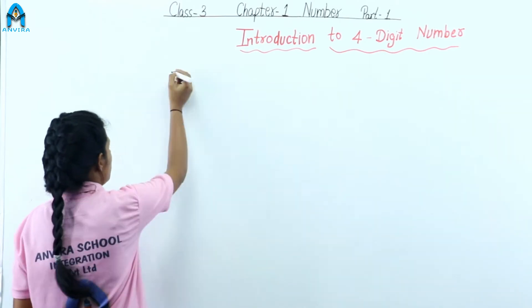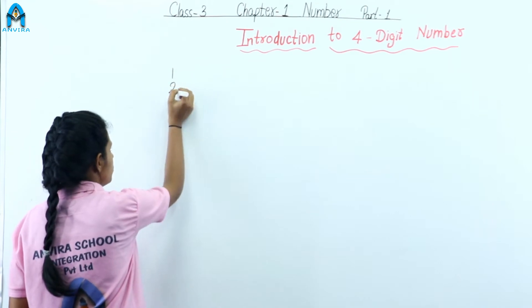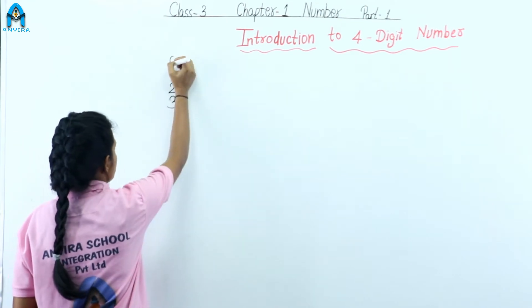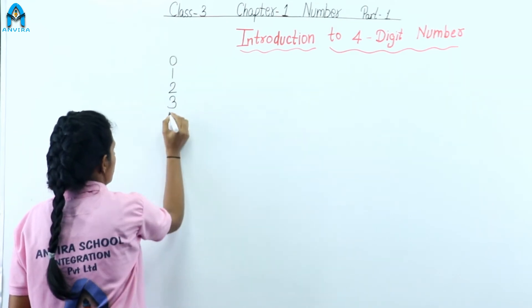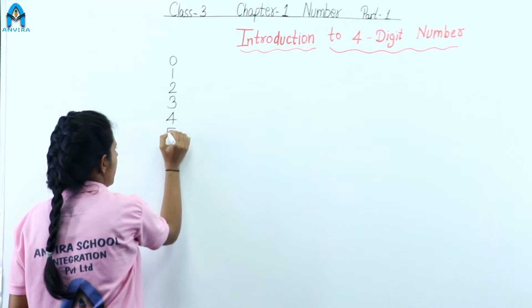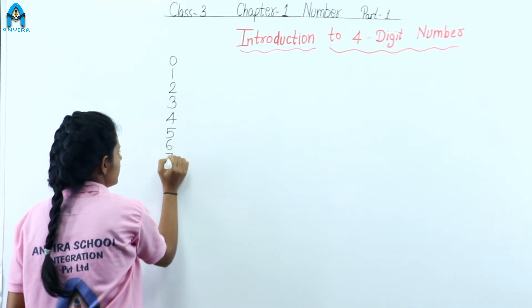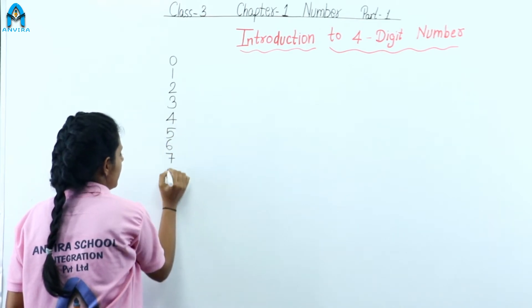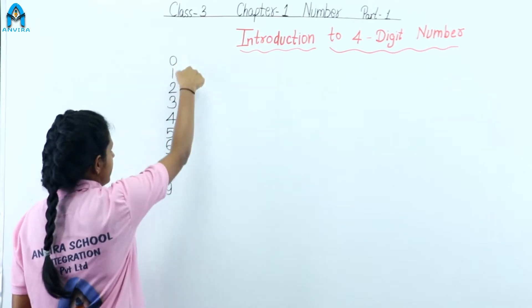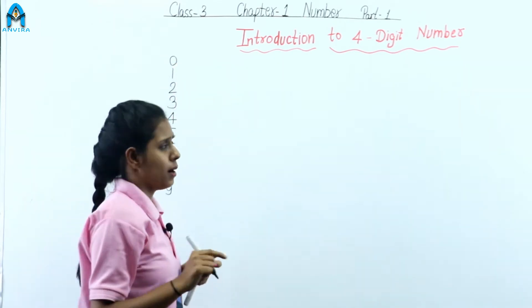The numbers 1, 2, 3, 4, 5, 6, 7, 8, and 9 — they are one-digit numbers.